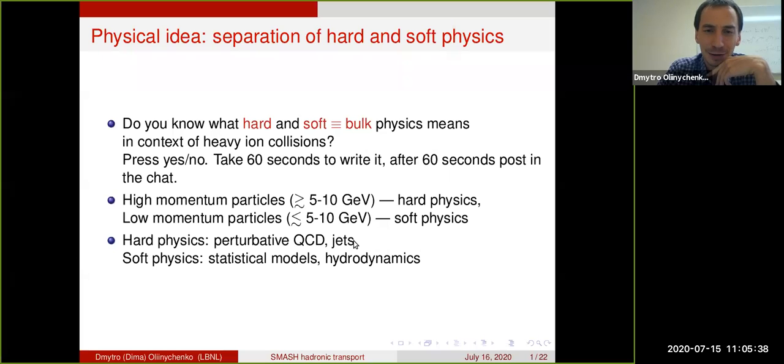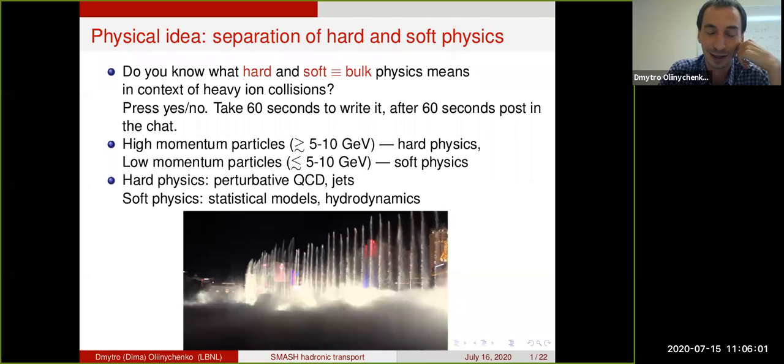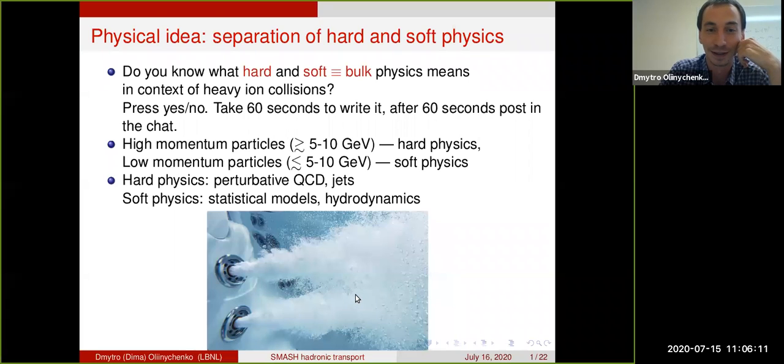There is a nice picture for how to think about this. You can imagine a fountain of water, and that would be a jet, and this fountain of water is shooting through dense fog, that will be bulk. Or if you are more into stronger interaction, you can imagine a jet in jacuzzi. A jet of water will be going through the jacuzzi and the water in jacuzzi will be bulk. Jets of water correspond to harder physics, and fog or water in jacuzzi corresponds to softer physics. In both cases, it makes sense to think about scale separation.